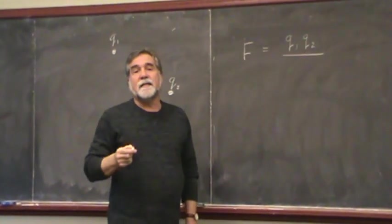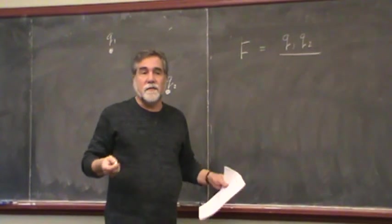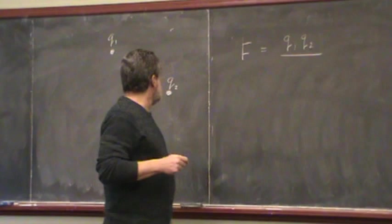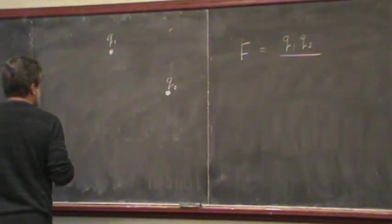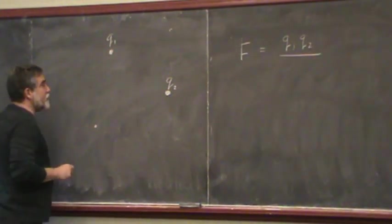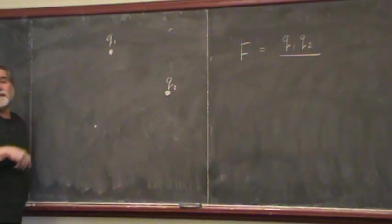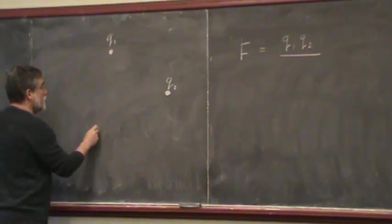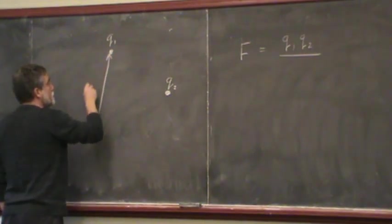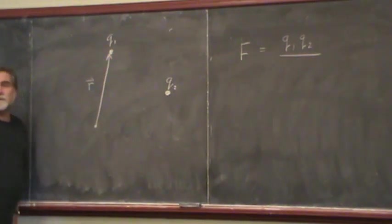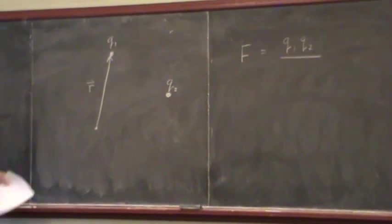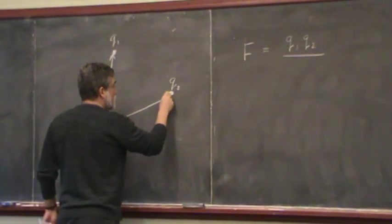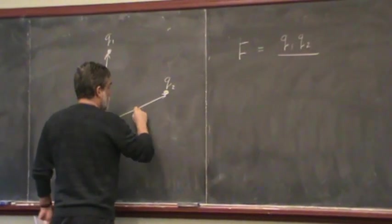Then we take the distance between the two. I'm going to be a little bit careful here about that. I've got some origin here, and I measure position with respect to the origin. Let's call that vector r. I'm measuring it with respect to some point I've just chosen. And I call this vector r2,